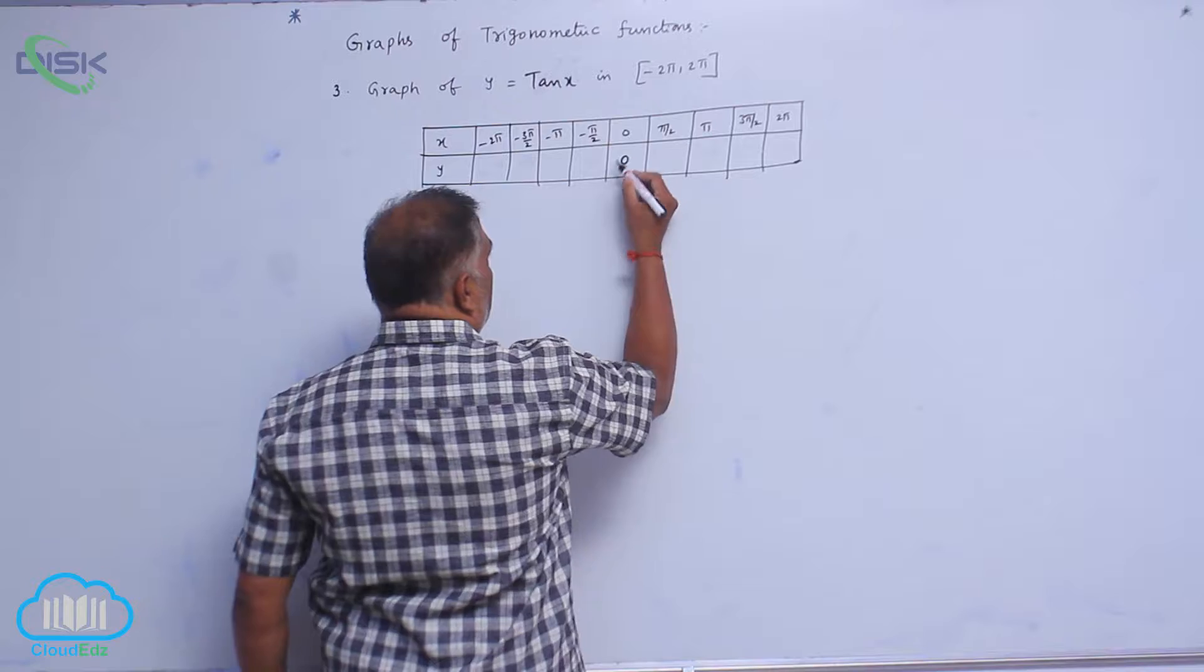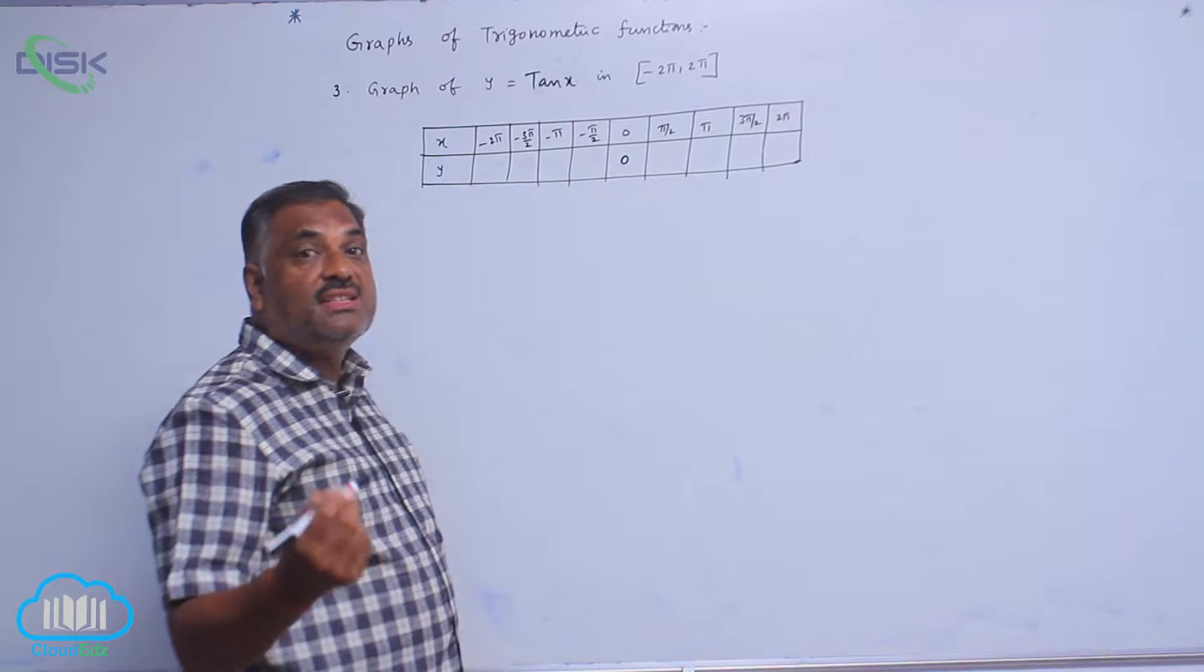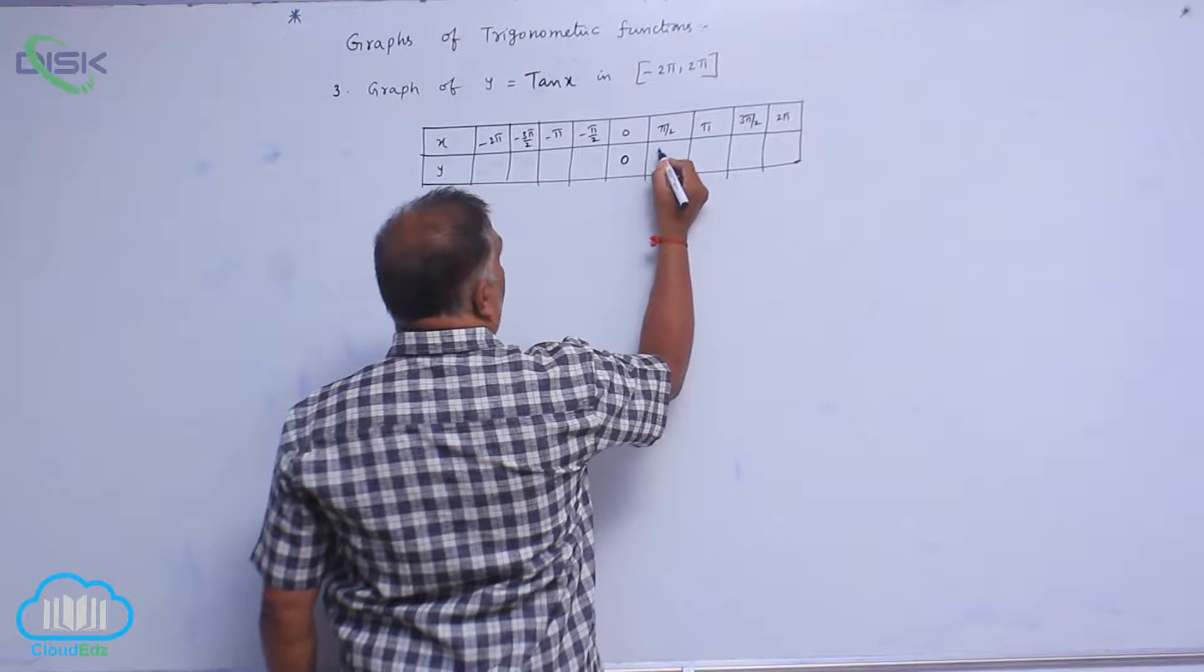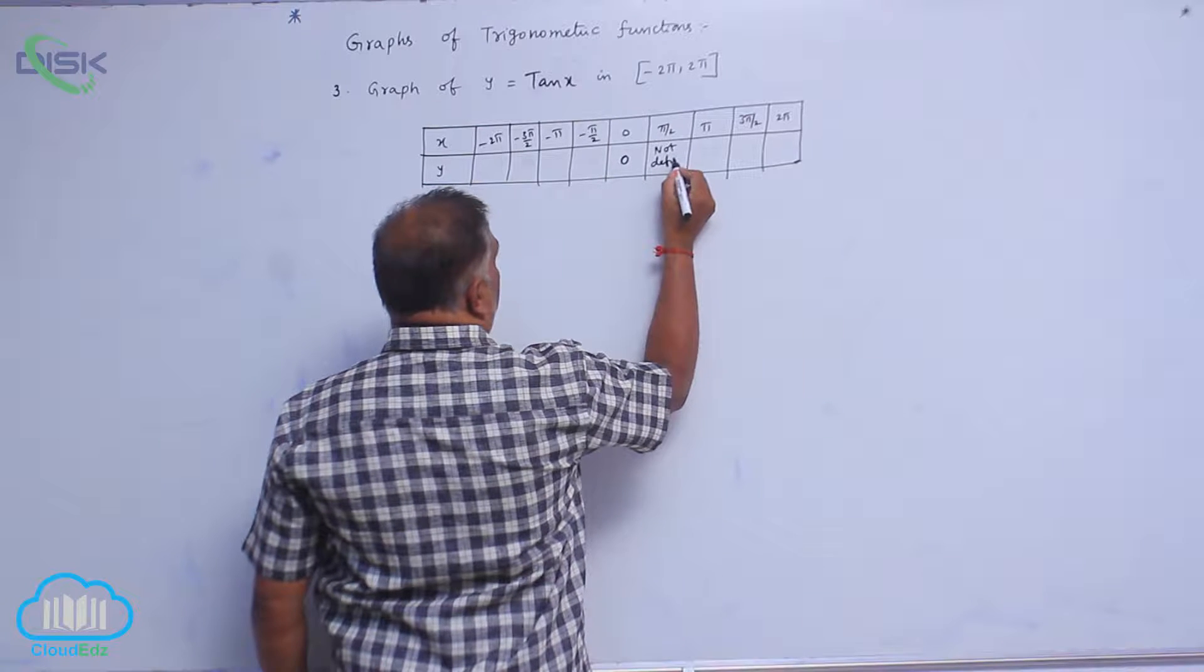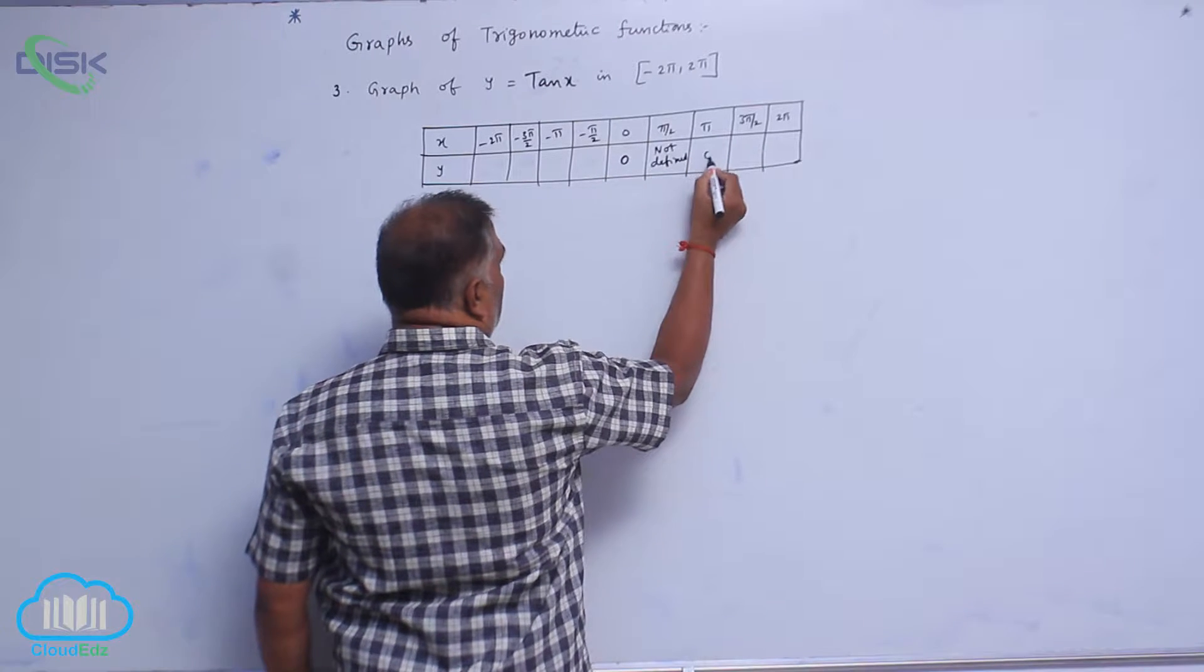Here, tan 0 is 0, tan 90 is infinity, so it is not defined. Again, tan π is equal to 0.